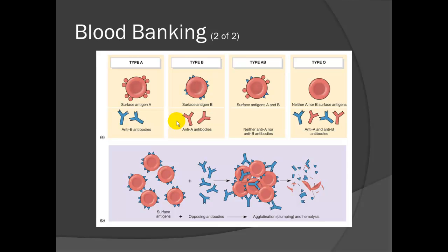General blood typing includes Type A, Type B, Type AB, and Type O. Each has antigens on the surface. Type A has a surface antigen of A, Type B has a surface antigen of B, Type AB has both A and B surface antigens, and Type O has neither — it doesn't have any surface antigen whatsoever.